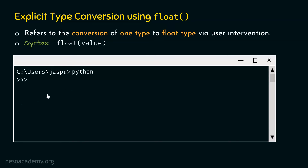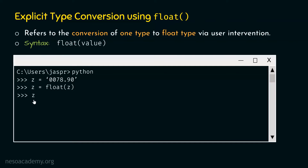Let's move on to the next example. Type z = '0078.90'. This time we have leading zeros and the entire floating point value is written within single quotes. Type z = float(z) and hit enter. If we type z and hit enter, we get 78.9. We don't get those leading zeros because they have no significance. Float handles this automatically. This is how explicit type conversion using float works.